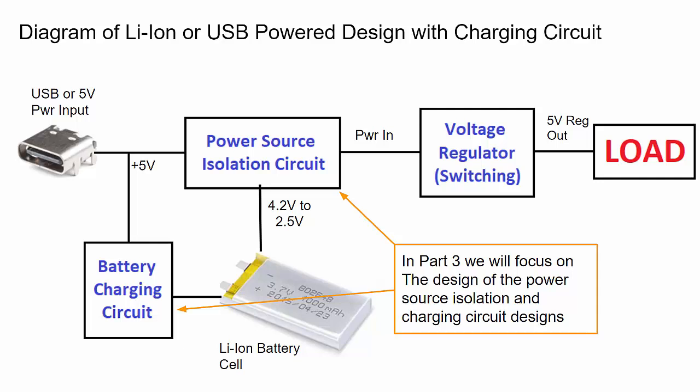The power source isolation circuit is going to be fairly simple with discrete components. The battery charging though, it's not something I want to handle myself in software or hardware, so I'm going to use a battery charging IC. Much like part two, we're going to go through the IC datasheet and look at the schematic.